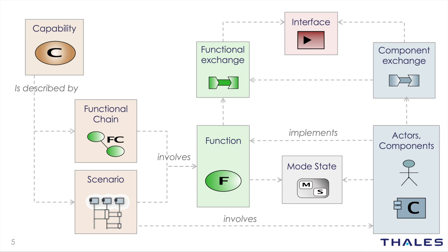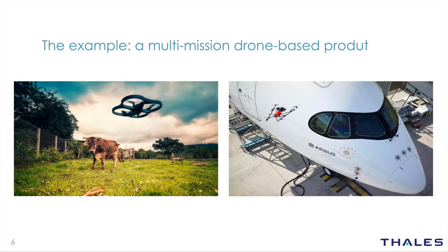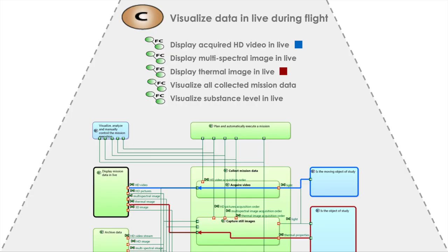So these core concepts of Arcadia are pretty easy to grasp. With all this, you can describe pretty precisely the need and the solution. To better illustrate these concepts, the system I'm going to use as an example is a multi-mission drone-based product. We can use a drone to monitor agricultural fields or to perform aircraft exterior inspection. The drone has several capabilities: it is able to fly automatically following a flight plan, to be manually controlled, and to capture data — images, scans, and so on.